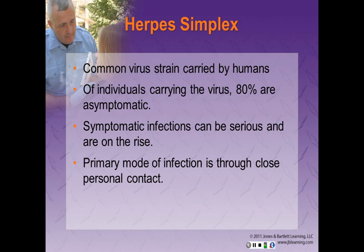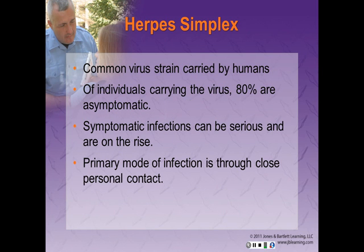Herpes simplex is a common virus strain carried by humans. Of individuals carrying the virus, 80% do not have symptoms. Symptomatic infections can be serious and are on the rise. The primary mode of infection is through close personal contact, so standard precautions are generally sufficient to prevent spread to or from healthcare workers.